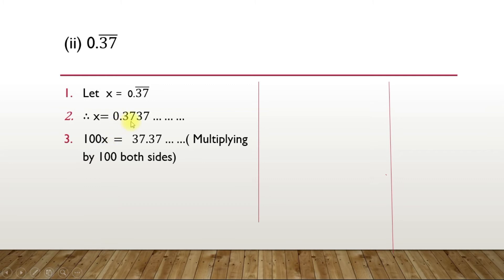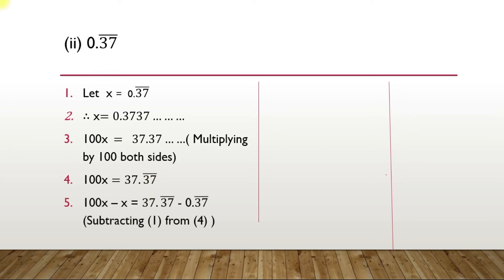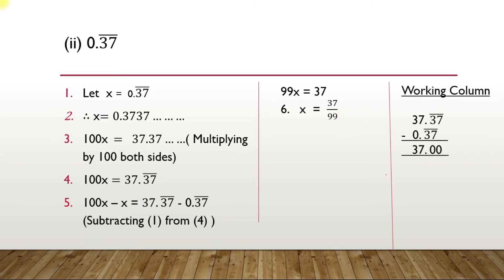So when you multiply this number by 100, the decimal point shifts 2 places to the right and you get 37.37 recurring. So 100x equals 37.37 recurring. The next step is subtracting equation 1 from equation 4: 100x minus x equals 37.37 recurring minus 0.37 recurring. You get 99x equals 37, so x equals 37 upon 99. The recurring 37 minus 37 gives 0, and that is how you get 37. Final answer: 0.37 recurring equals 37 upon 99.